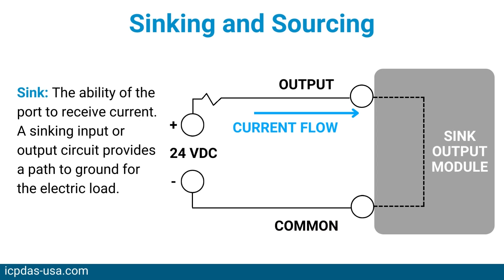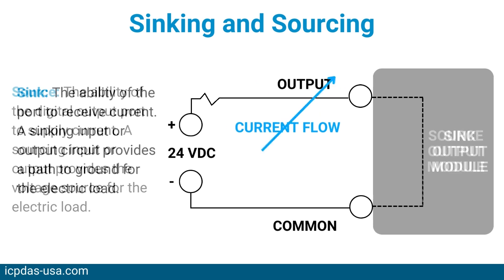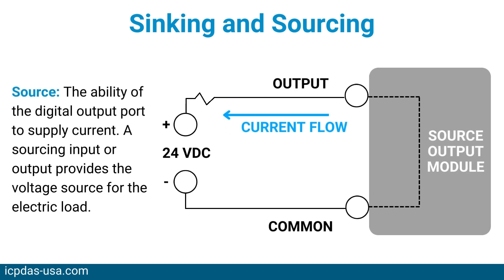Sink Current refers to the ability of the port to receive current. A sinking input or output circuit provides a path to ground for the electric load. Source Current refers to the ability of the digital output port to supply current. A sourcing input or output provides a voltage source for the electric load.